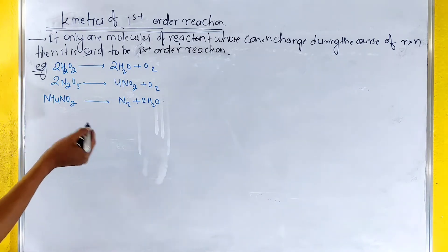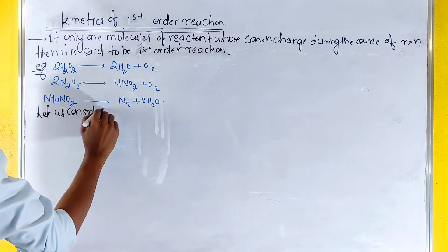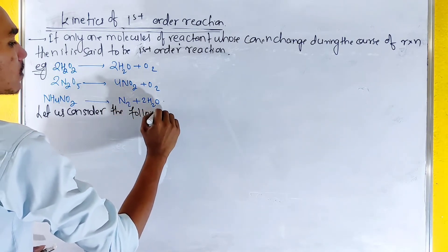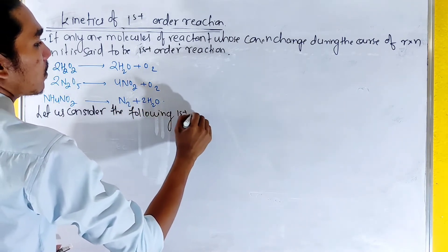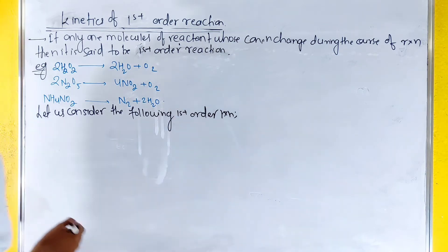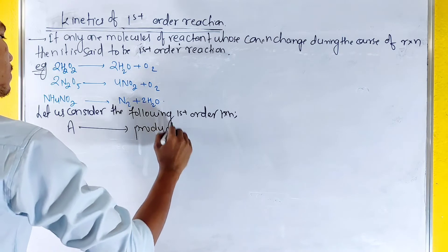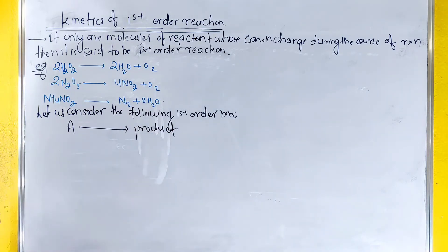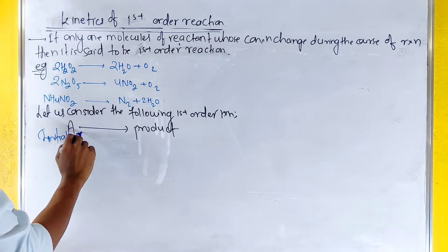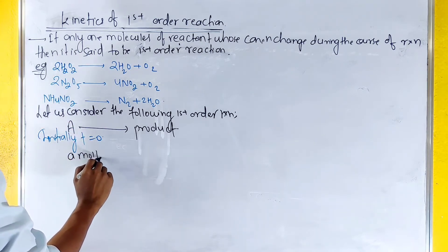Let us consider the following first-order reaction. A gives product. Under initial conditions, at t equals zero, the concentration of A is 'a' mol per liter.